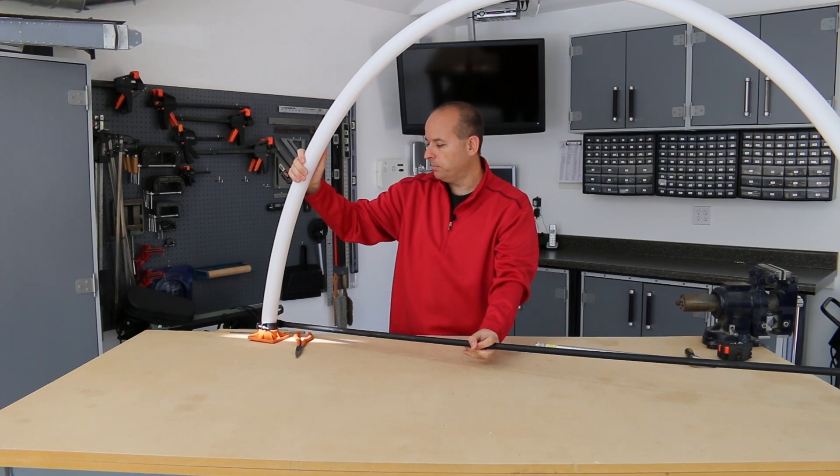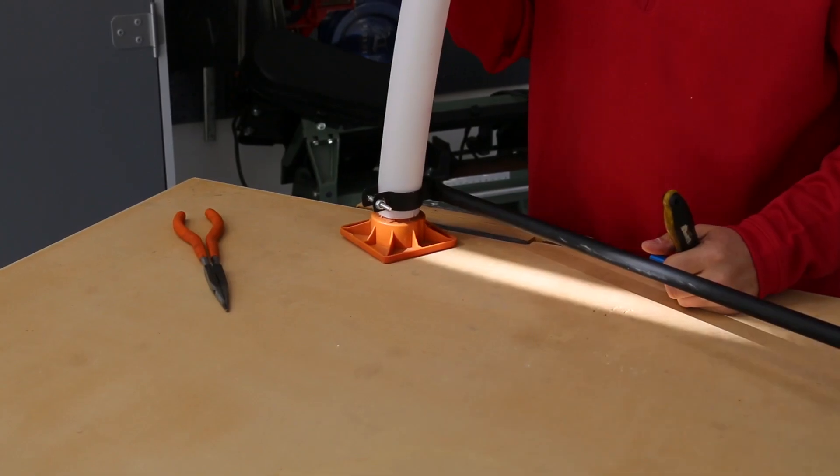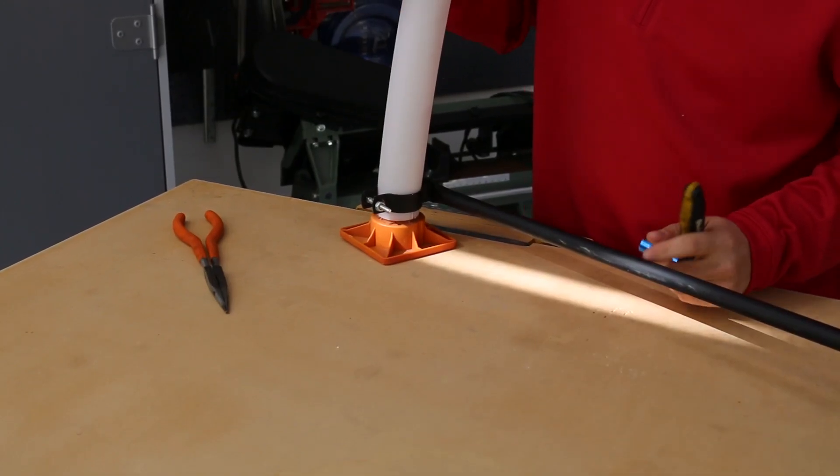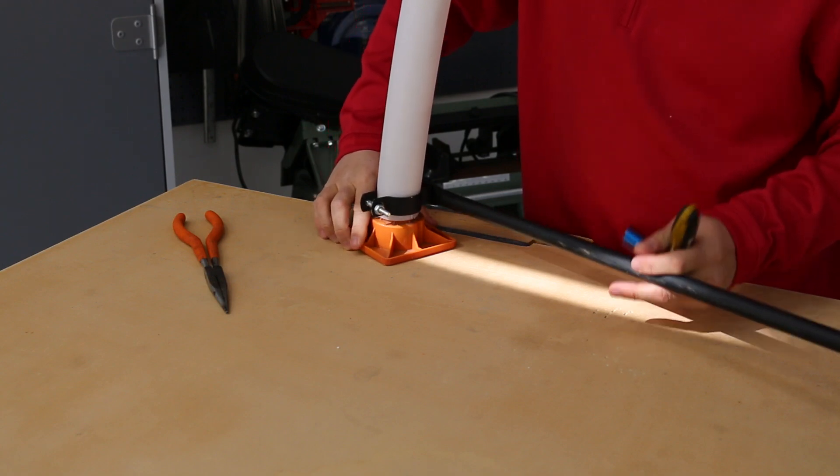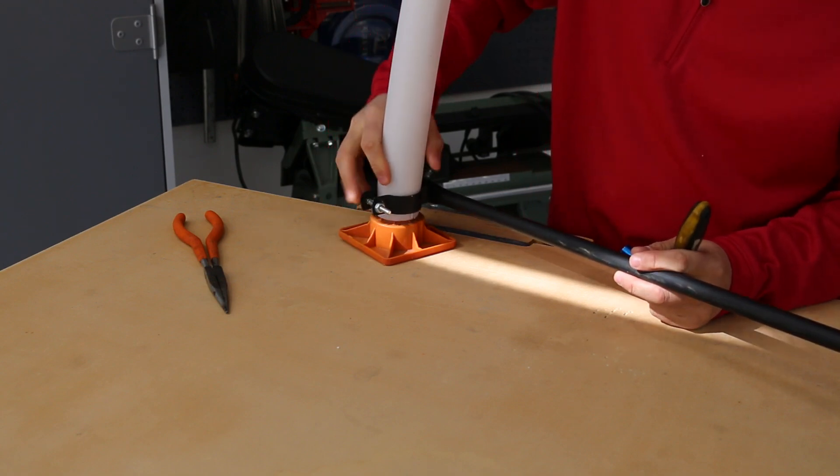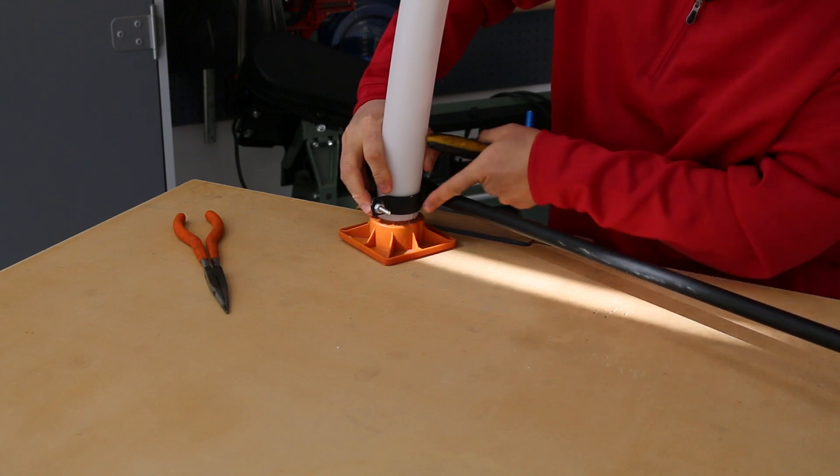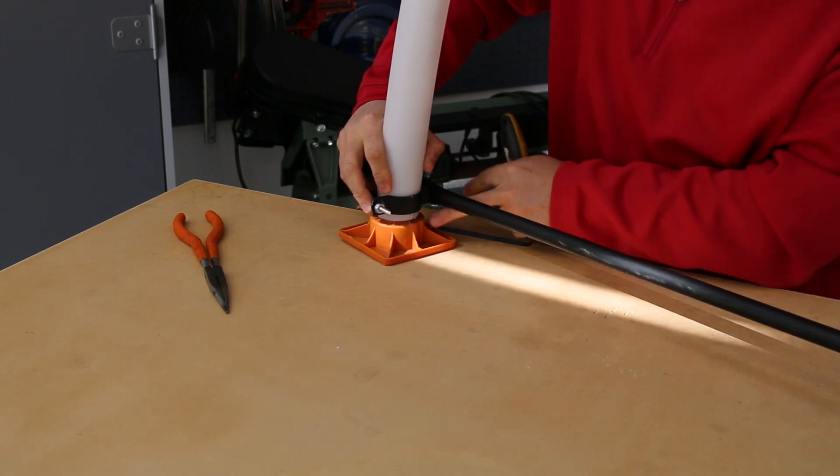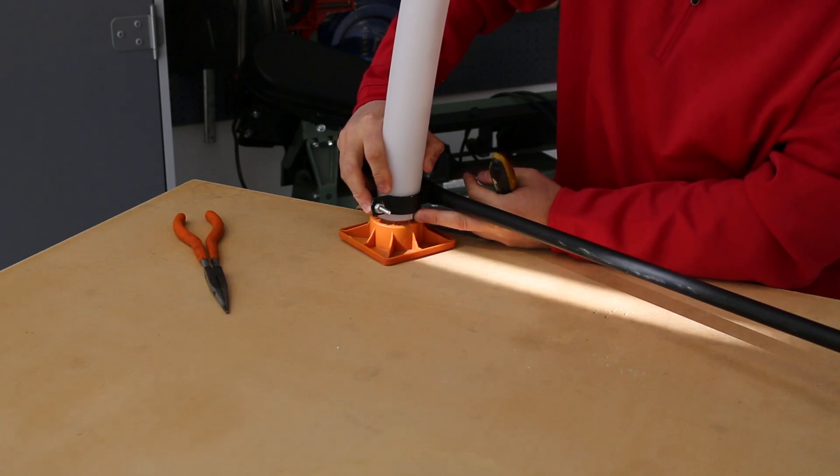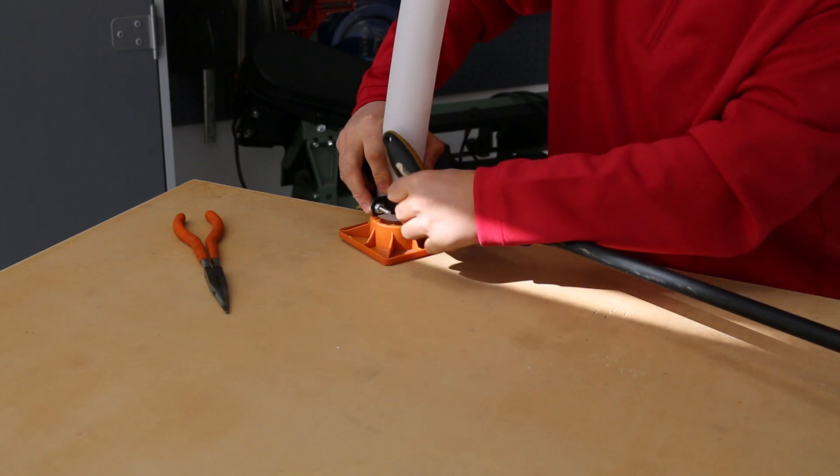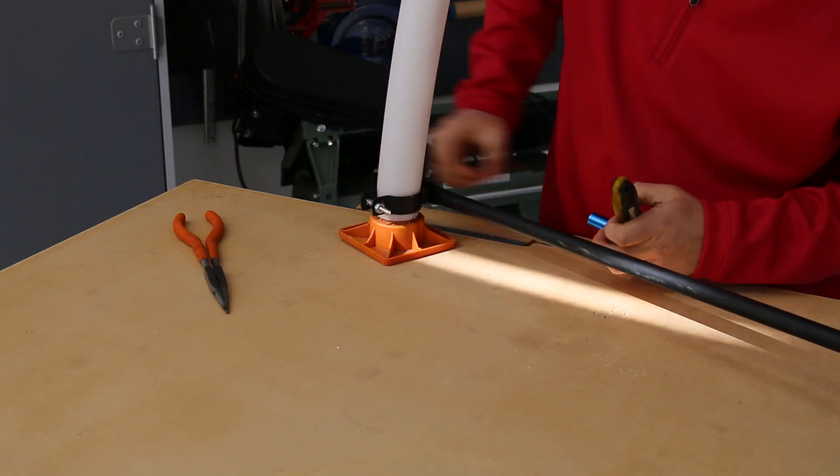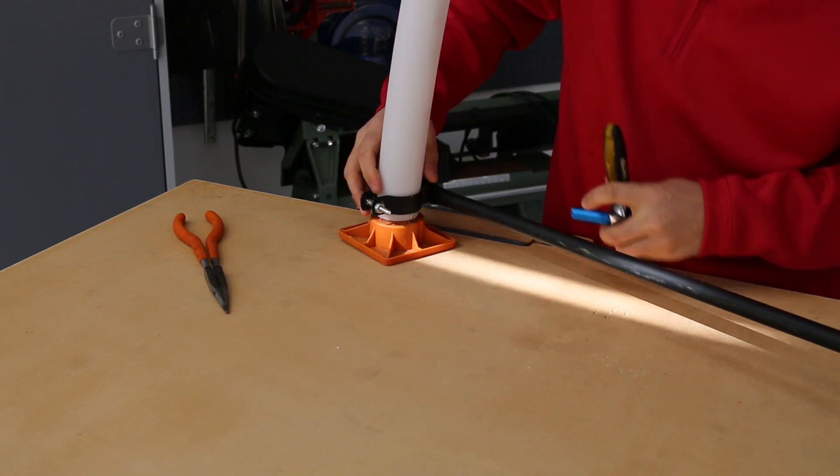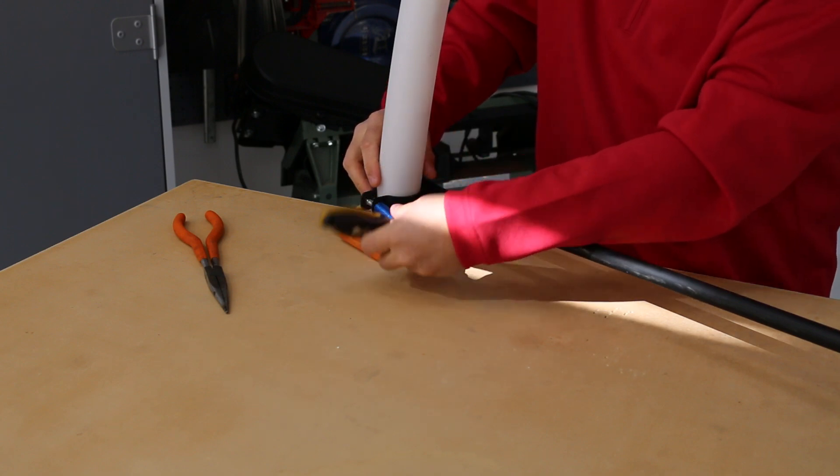After you slide each of the rebar caps on the end of the tube, go ahead and move the clamp so that it's just about a quarter of an inch from the bottom of the tube. You'll notice that the slits that we made earlier in the tube are what allow the clamp to really pull that tube into the rebar cap once we tighten this bolt.